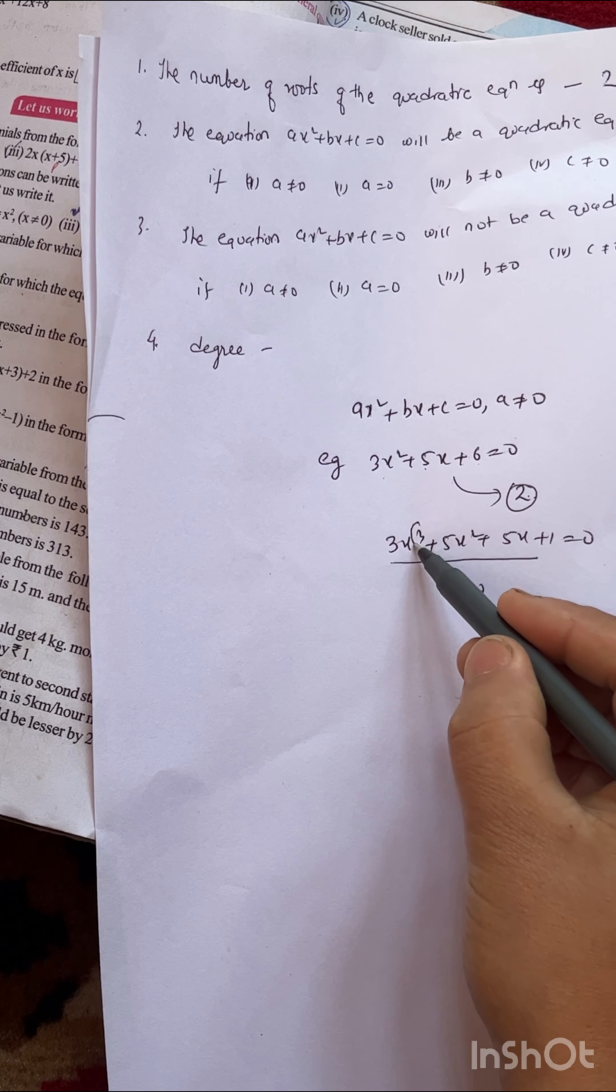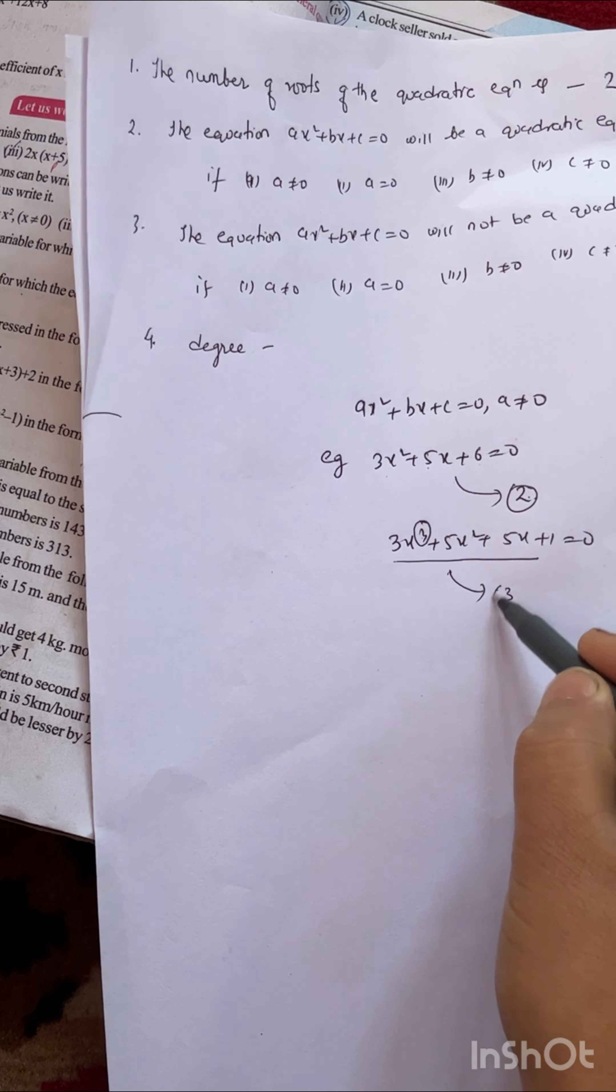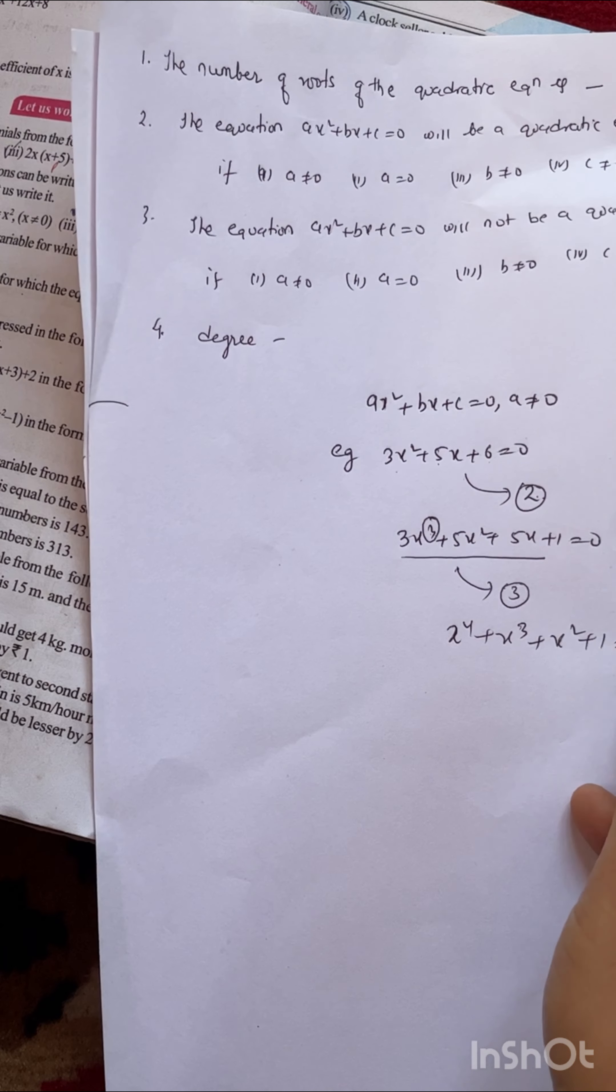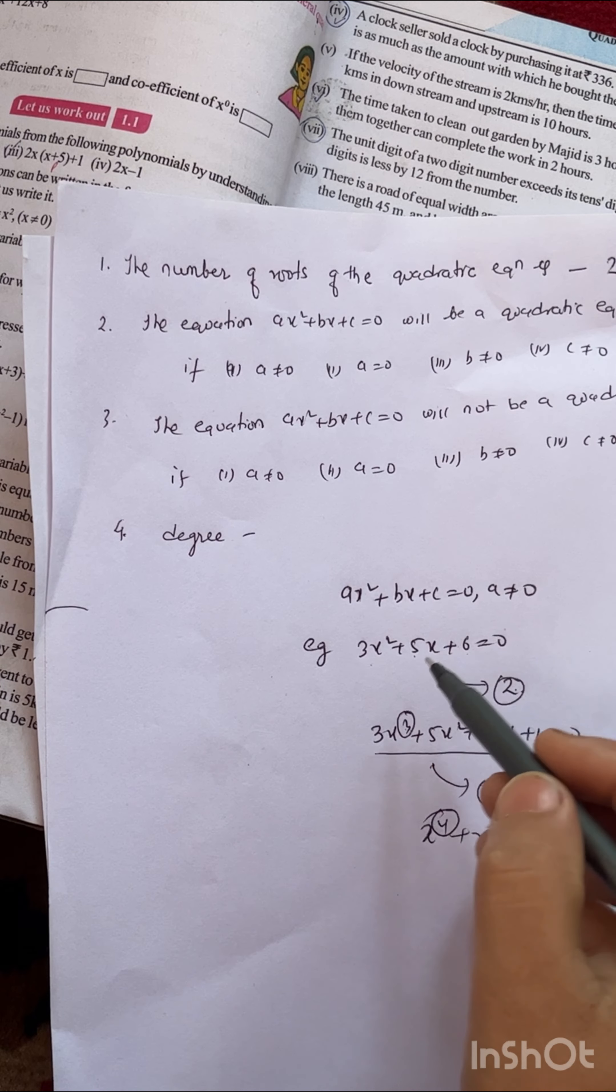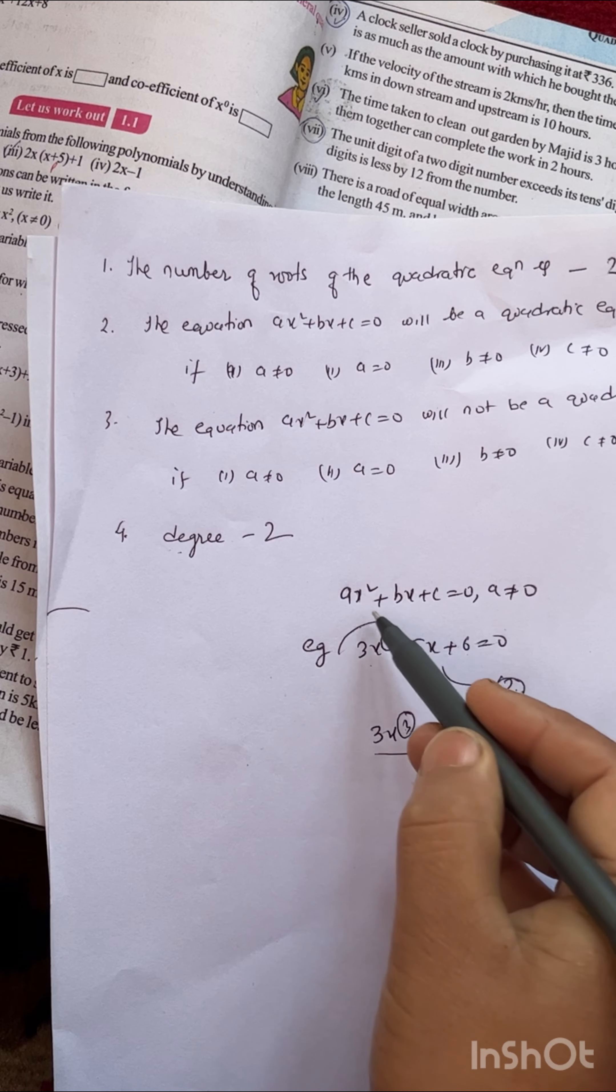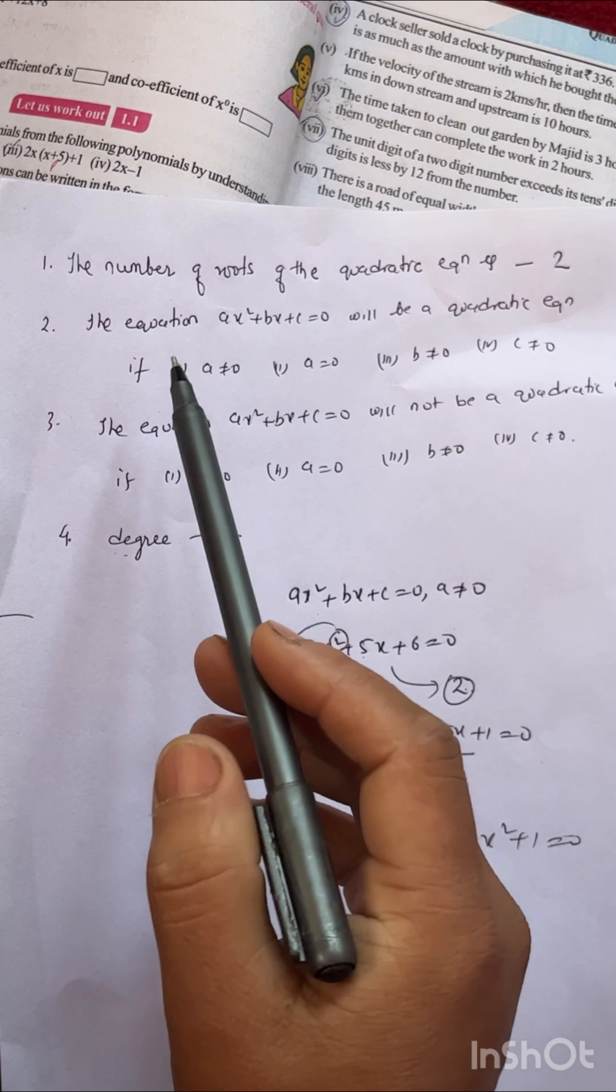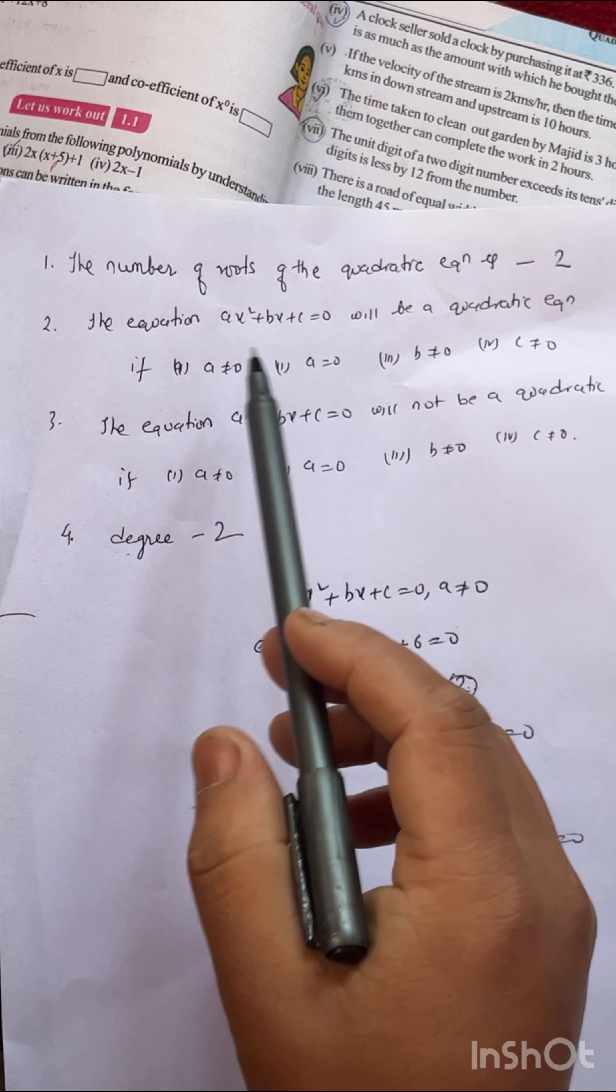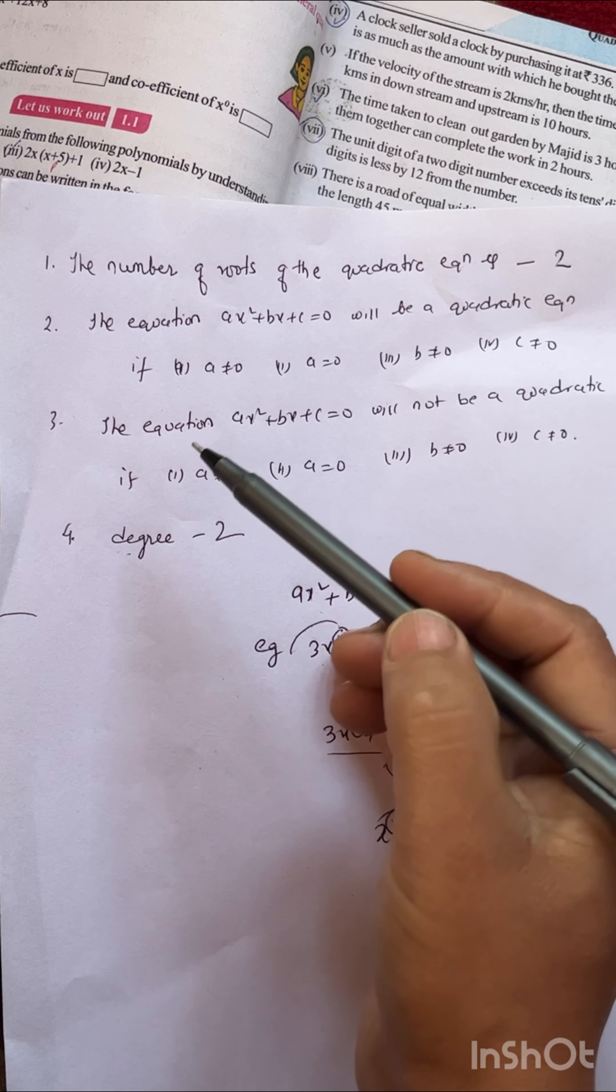The highest power or degree is 3, so this has 3 roots. Next, the equation ax² + bx + c = 0 will be a quadratic equation if a ≠ 0.